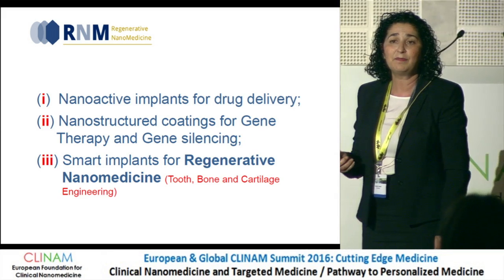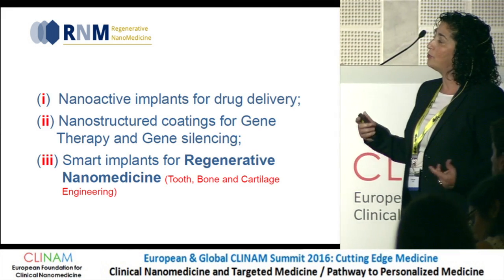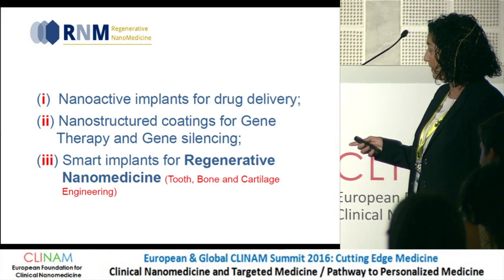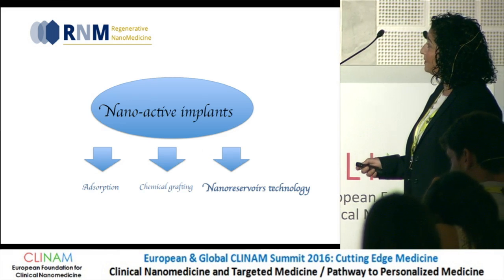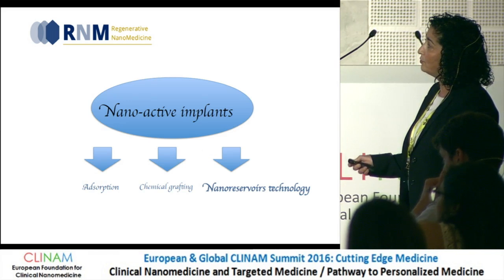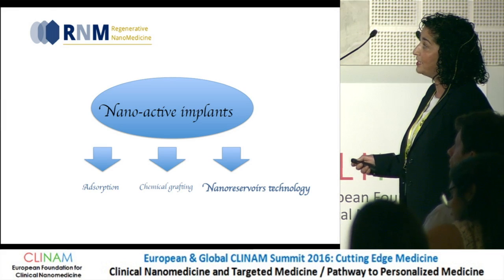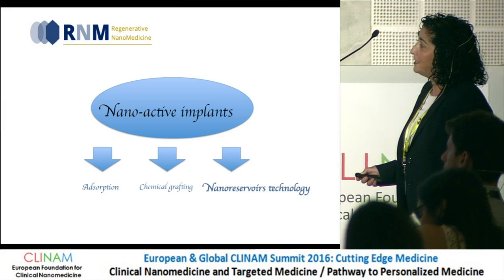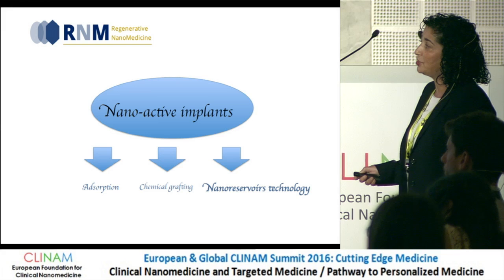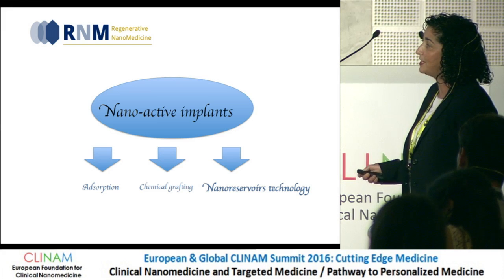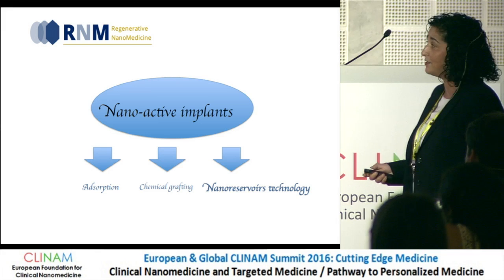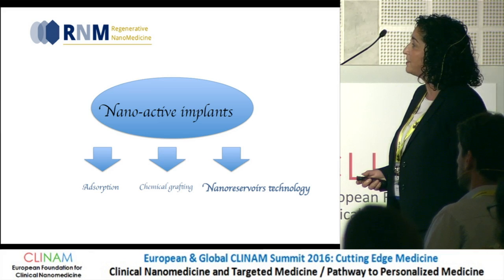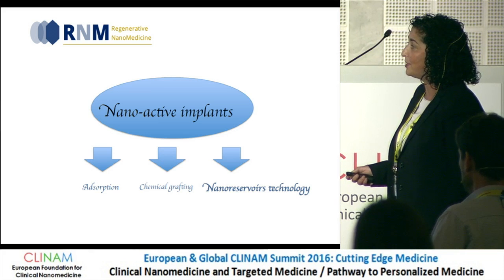That means the third generation of implants, incorporating not only active molecules but also living cells. To develop active implants, we can absorb directly the active molecules on the surface of the implants. The implants can be degradable or not degradable. We can also do chemical grafting — reversible or irreversible attachment. In our case, we need free active molecules able to interact with the receptors of cells, so we need a reversible attachment.